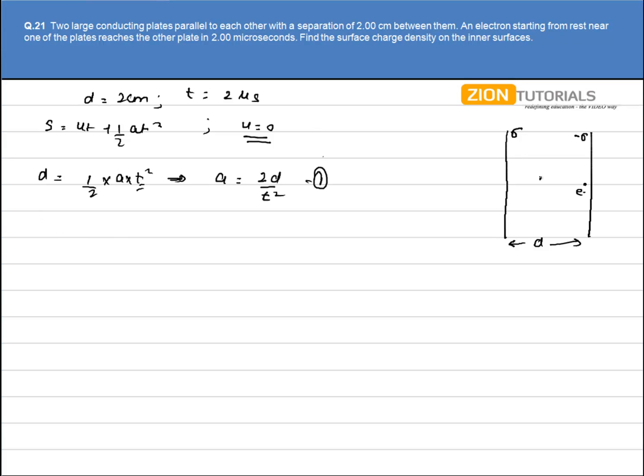Now second point is that we know that electric field due to a large conducting plate is given by sigma by 2 epsilon not. Now I do have two plates over here. Please note that the direction of electric field due to the plate A is in this direction with a magnitude of sigma by 2 epsilon not. And the direction of the electric field due to the minus sigma charge is also sigma by 2 epsilon not and that too in the same direction because the charge is negative.